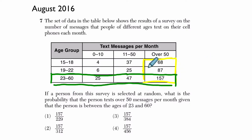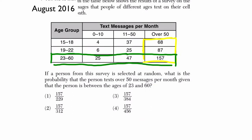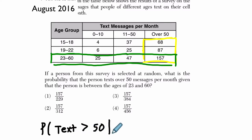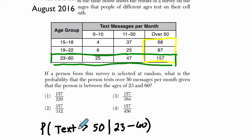The only thing we have to really do in this problem is find our marginal frequencies — and we don't have to do it for all of the different rows, just the ones we're concerned with — and then use it to write a probability. The probability we're looking for is that you text greater than 50 times, given that you are between the ages of 23 and 60. This is the notation. In other words, we want to find how likely it is that you text over 50 times if we know that you are between 23 and 60.